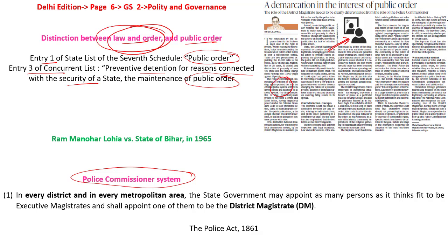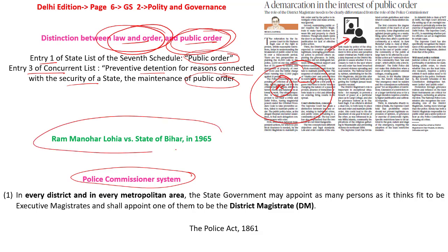So public order falls within the larger loop of law and order. Looking at this explanation, we can conclude it may be the same incident, but it depends on the context, the circumstance, and the specific individuals involved. The depth, extent, and gravity of the incident are considered when it comes to public order. The Supreme Court re-established this in Ram Manohar Lohia vs State of Bihar, 1965, stating that public order is where the community or public at large is affected, as it embraces more of the community than law and order, which affects only a few individuals.